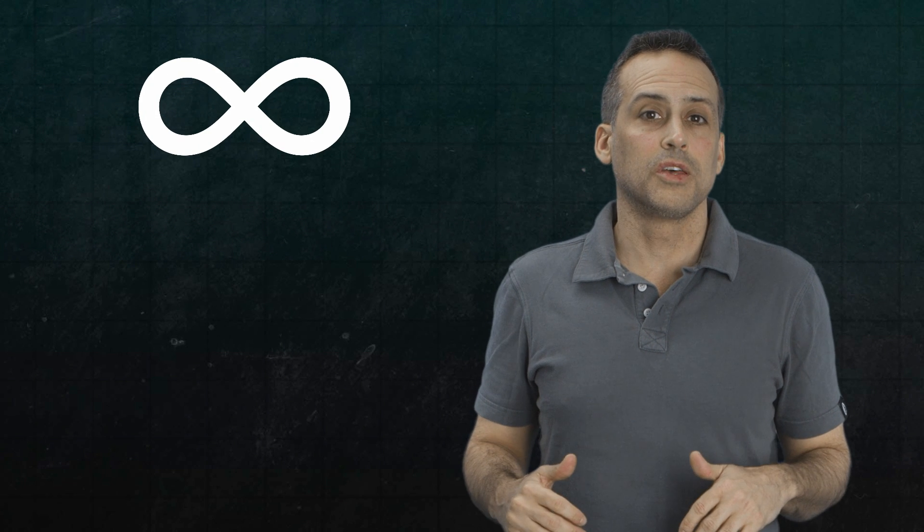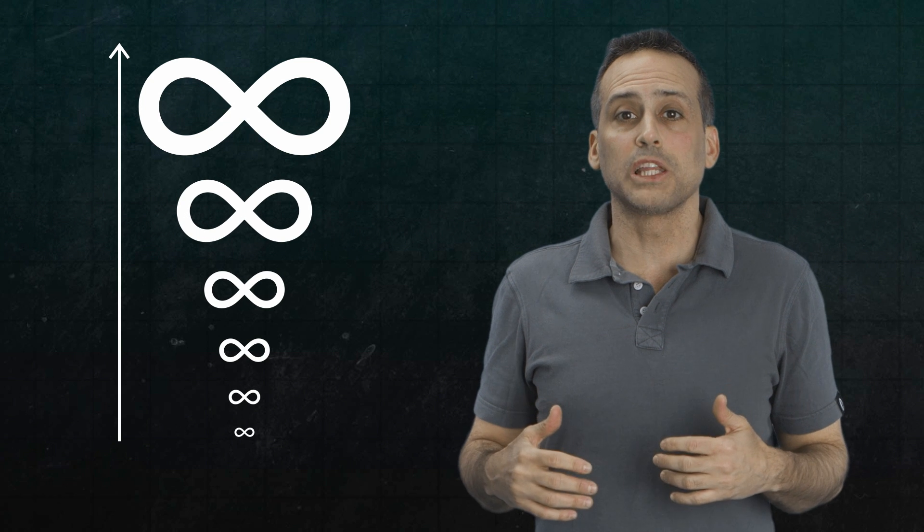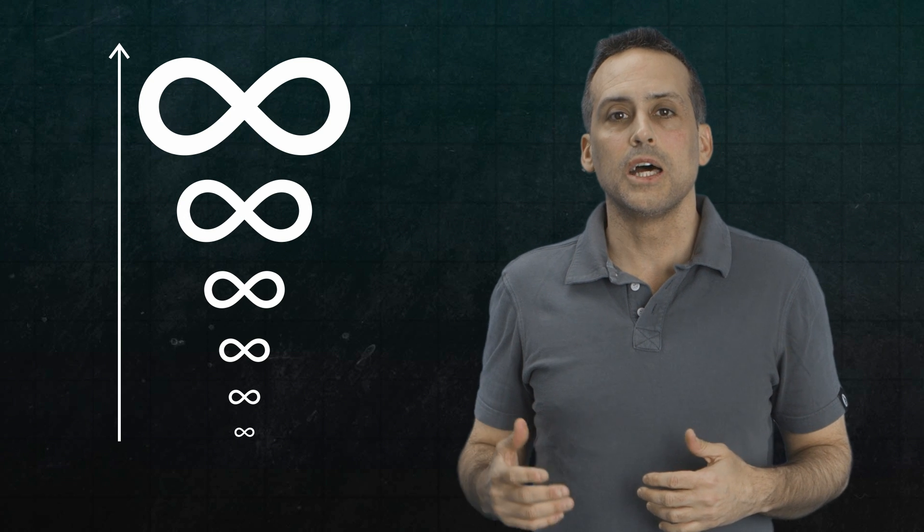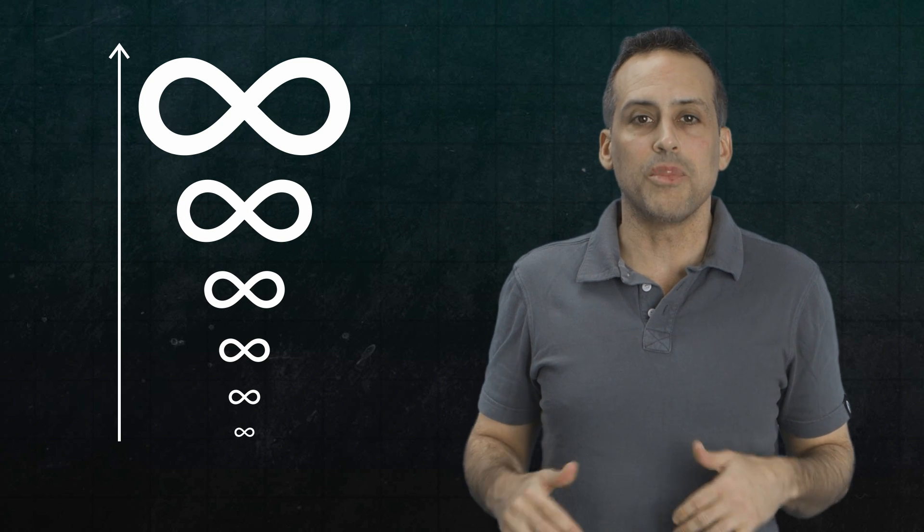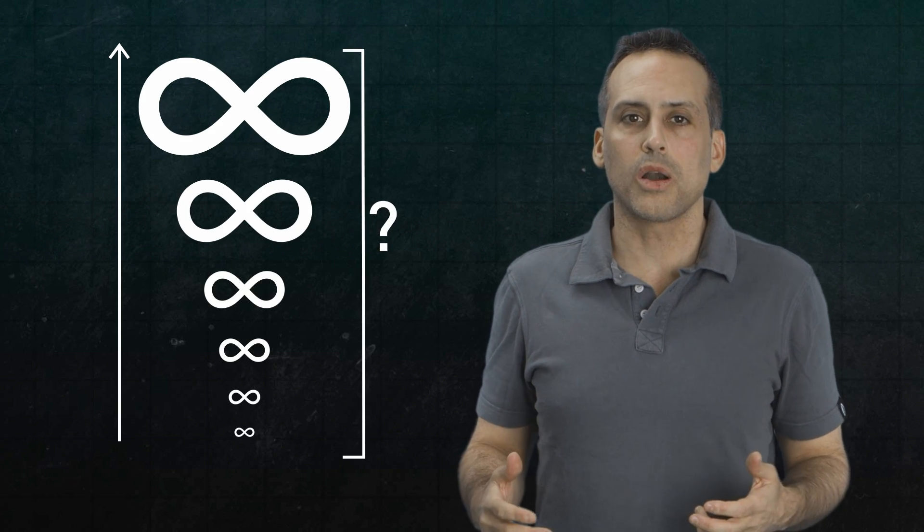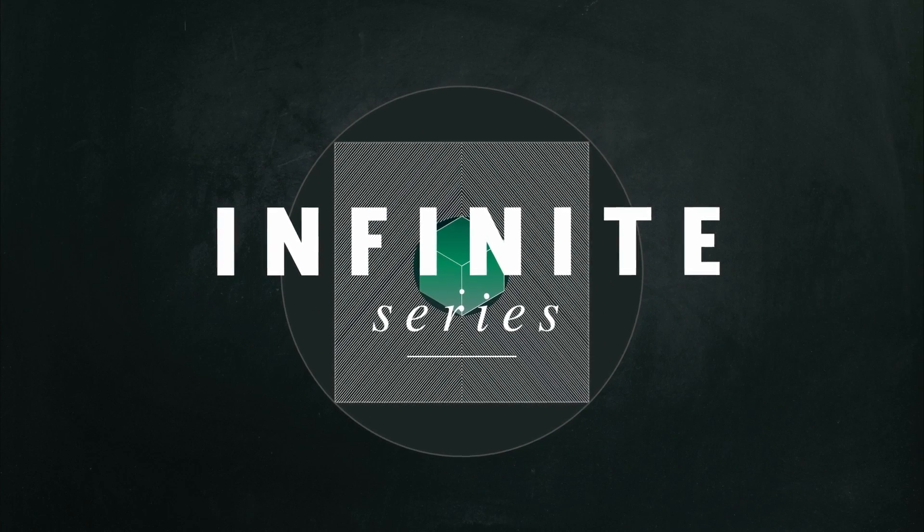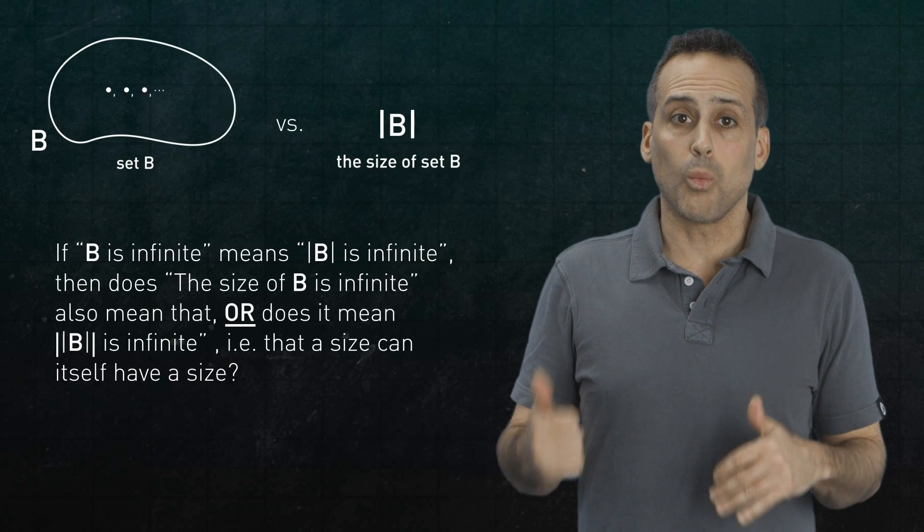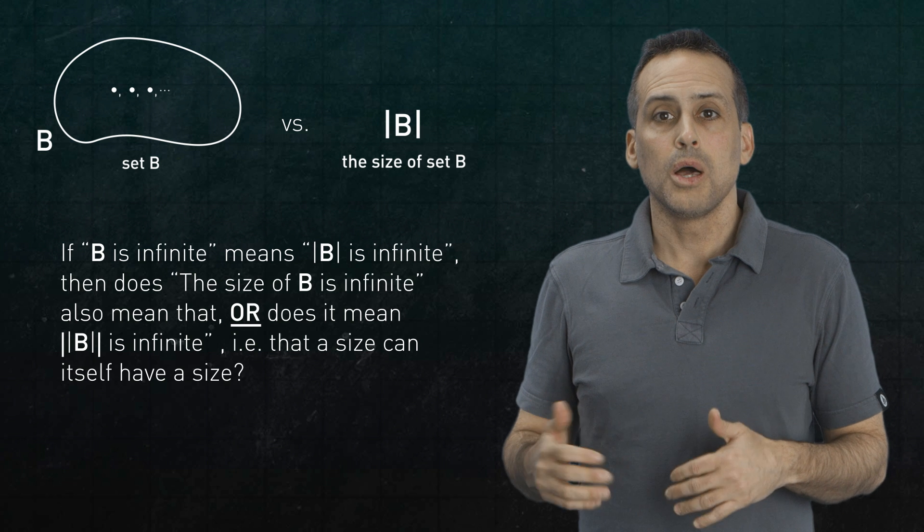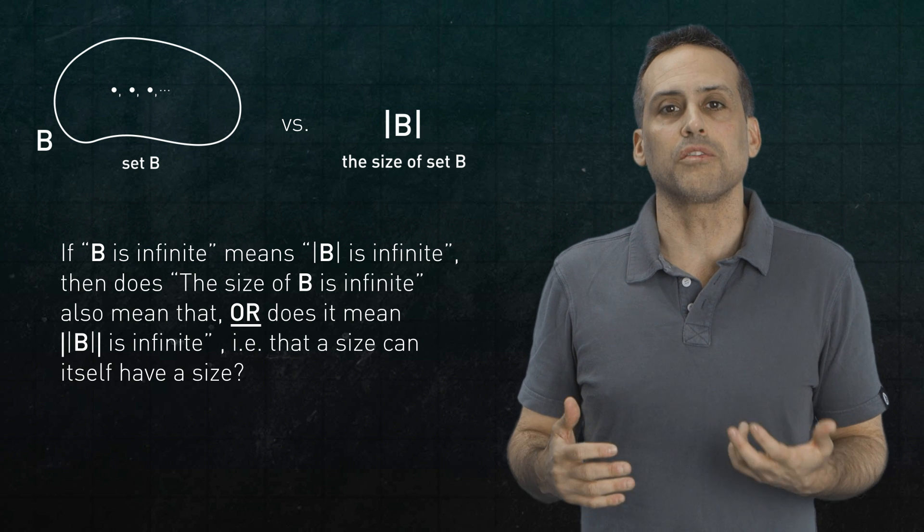Infinities come in different sizes. There's a whole tower of progressively larger sizes of infinity. So what's the right way to describe the size of that whole tower?